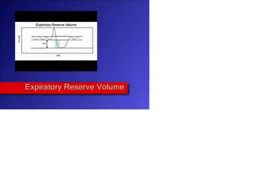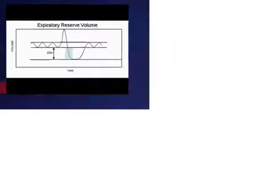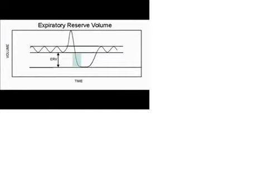The expiratory reserve volume is the amount of gas that an individual can exhale beyond a tidal expiration. As you're sitting there and exhale normally, and then push all the gas out that you possibly can, that's your expiratory reserve volume. Normally it is 20% of the total lung capacity.